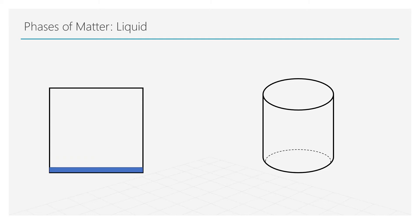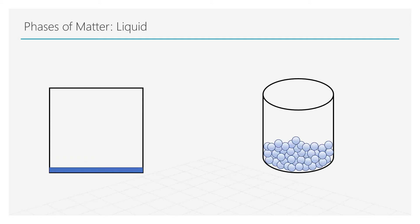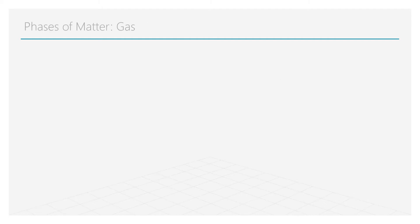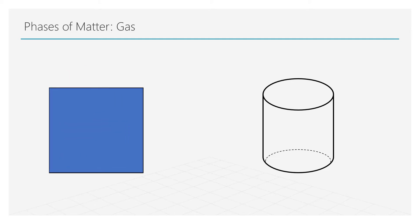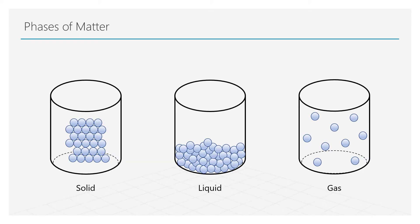If a liquid is not confined, it starts to flow. The atomic arrangement in gases is extremely irregular and loosely packed compared to both solids and liquids. Because of this loose packing, a gas occupies the entire volume of its container. The large distances between gas molecules also allow them to be compressed. We usually refer to both liquids and gases as fluids.